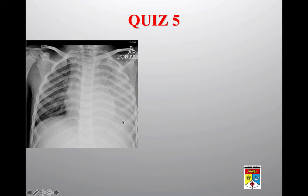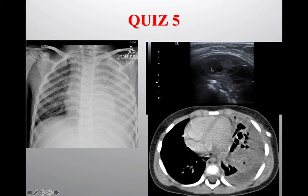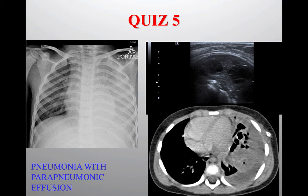Quiz 5: The abnormality is in the left hemithorax — opaque but not as completely opaque as quiz 3, suggesting it may still be fluid. The left heart border is delineated. Ultrasound showed complex fluid with septation — typical ultrasound appearance of an empyema. CT scan confirmed necrotizing pneumonia with a floculated empyema — a case of pneumonia with parapneumonic effusion which is empyema.